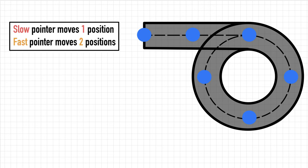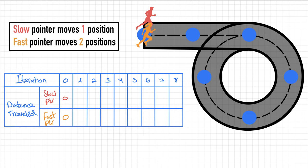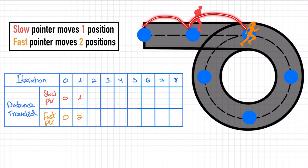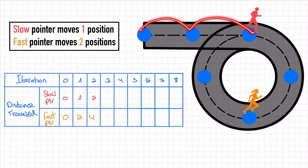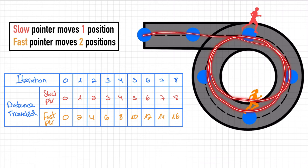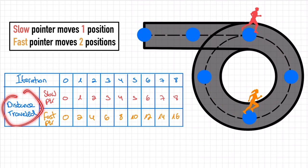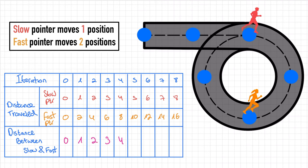The more formal explanation is this. At each iteration the slow pointer moves one position and the fast pointer moves two. At iteration zero both will be at position zero, having traveled zero distance. At iteration one, the slow pointer will have traveled one meter and the fast pointer two meters. At iteration two, the slow pointer will have traveled two meters and the fast pointer four meters, and so on. At some point the pointers will be moving in circles, so their positions will start to repeat, but the distance traveled will keep growing with each step — even if you're running in circles, the distance you've run still grows.